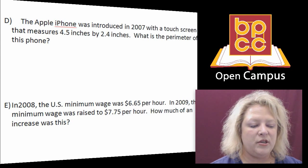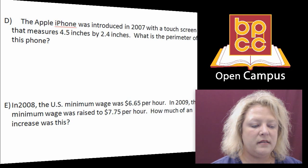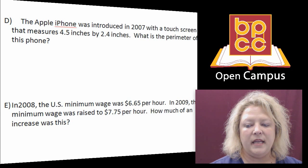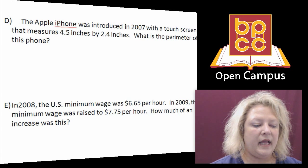And the bottom one talks about minimum wage and how it increased from $6.65 in 2008 to $7.75 in 2009. So to find out how much it went up, you would just subtract $6.65 from $7.75. And that gives you that it went up $1.10.